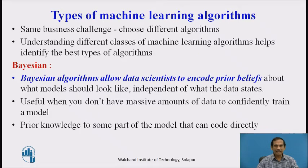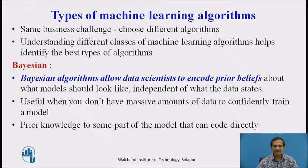Now we look at the types of machine learning algorithms that are available. Since business challenges differ, for the same challenge we may choose different algorithms to compare results. We also understand different classes of machine learning algorithms — whether supervised, unsupervised, reinforced, or neural networks and deep learning — which helps us identify the best type for a given problem.